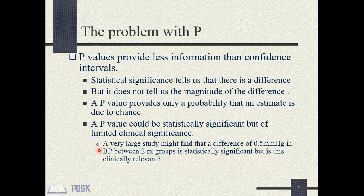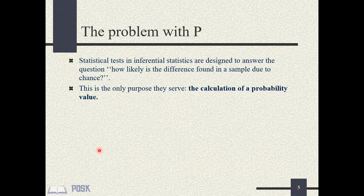But ask yourself — is this clinically relevant? As someone said in the past, a large study dooms you to statistical significance. P-values do not indicate clinical significance. Supposing you find that the mean height of 5-year-old and 4-year-old children was 172 cm and 171.5 cm respectively, and the p-value of the significance test was 0.02, which means 5-year-old kids are significantly taller than 4-year-olds by 0.5 cm. So what?